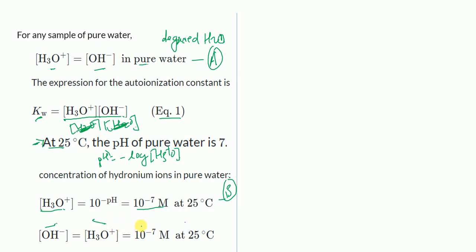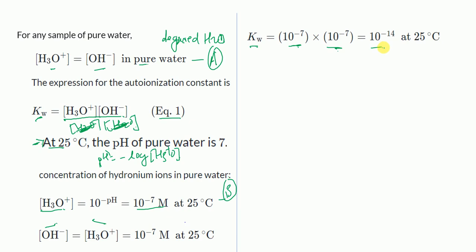Since [H₃O⁺] = [OH⁻] in pure water, the concentration of hydroxide ion is also 10⁻⁷ mol/L at 25°C. Substituting both values into the Kw expression gives Kw = 10⁻⁷ × 10⁻⁷ = 10⁻¹⁴. So Kw = 10⁻¹⁴ mol²/L² at 25°C.